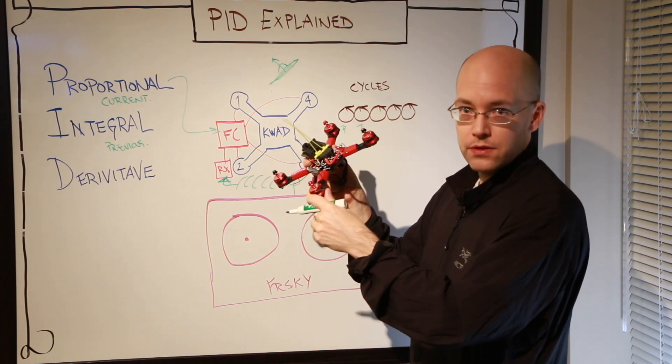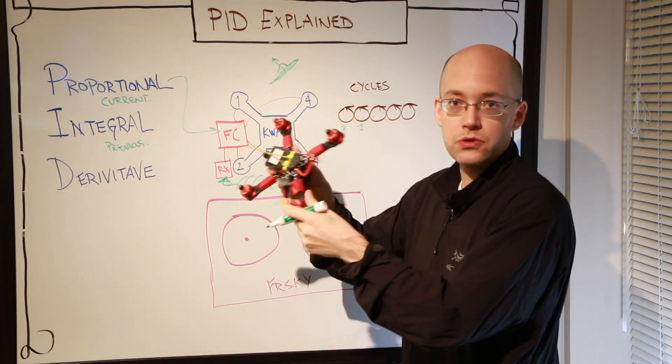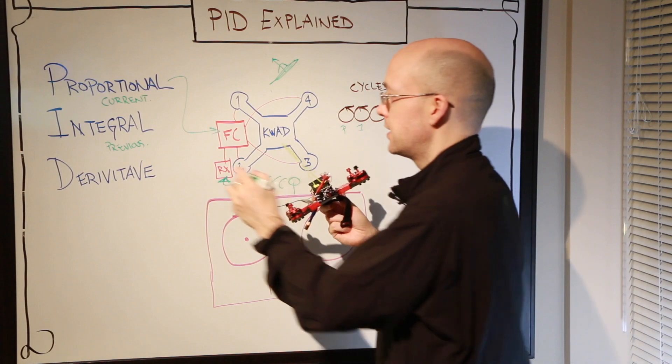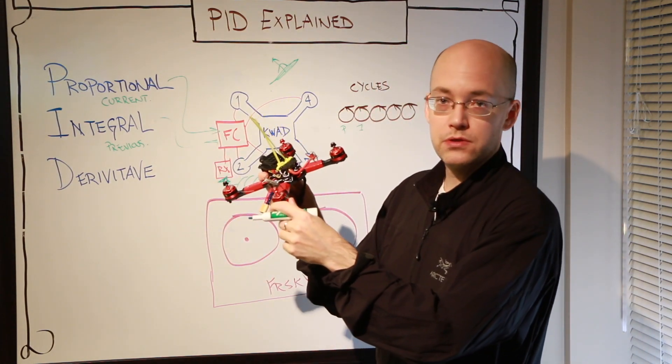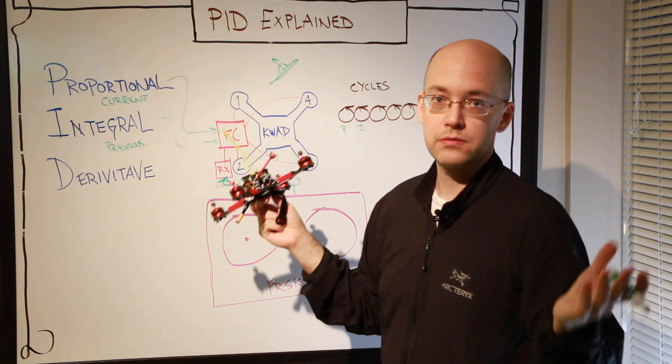But on its own, integral is just too slow. It doesn't have the large proportional correction. So if we were to fly just on integral, then what would happen is the quad will just move too slow and it'd be too sluggish to our commands, and then potentially it will crash.